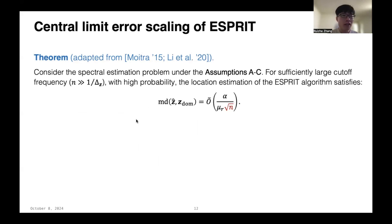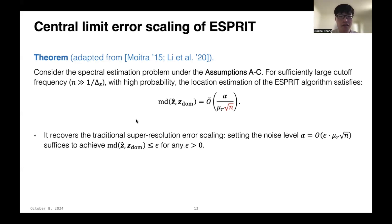So, before stating our optimal error-scaling results, let me first introduce the simple limit error-scaling of the ESPRIT algorithm, which can be derived from previous results. So, basically, under the assumptions A to C, as I said earlier, for sufficiently large cutoff frequency, with high probability, the ESPRIT algorithm can achieve the location estimation error scales like α over μ_r times square root of n. Intuitively, this result has already recovered the traditional super-resolution error-scaling, because if we set the noise level α to be very small, in other words, the noise in the signal are polynomially small in terms of ε, then it's sufficient to take an ε-independent cutoff frequency n to achieve location estimation error at most ε, for arbitrarily small ε.